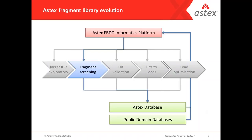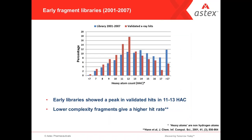Over the years we've constantly looked at our fragment library — it's the longest-running project at Aztec to constantly evolve that library. We do that by looking at the results output from fragment screenings. One of the things we did relatively early on was look at the size distribution of compounds in our library versus the size distribution of X-ray hits. In red we see the heavy atom count distribution for X-ray hits, and in blue the distribution for the compounds in our library. We can see quite clearly a shift to the left — smaller size — for validated X-ray hits.